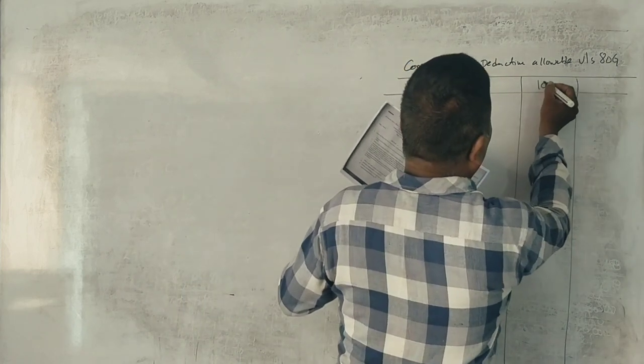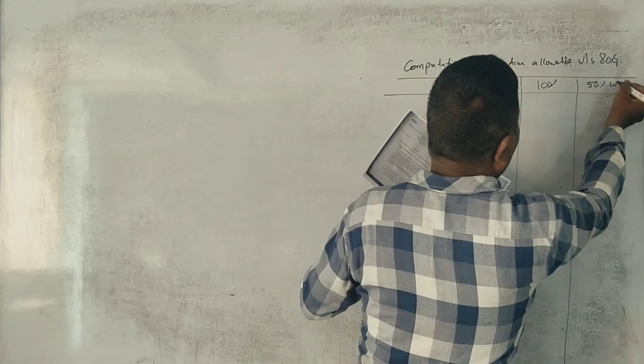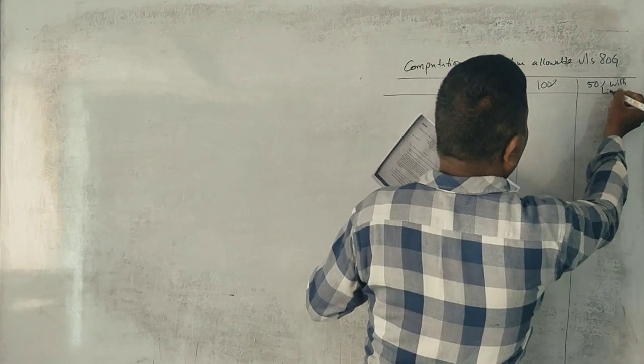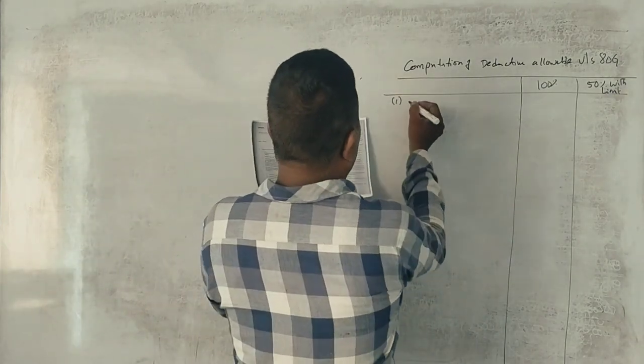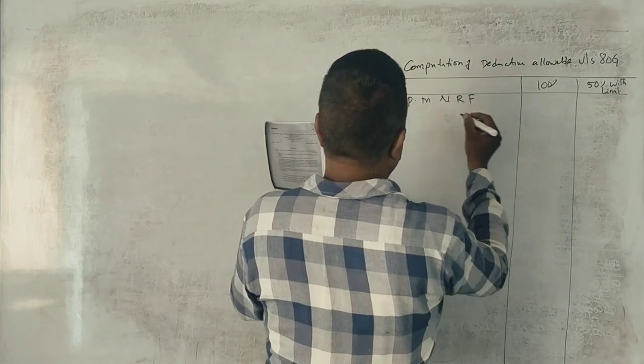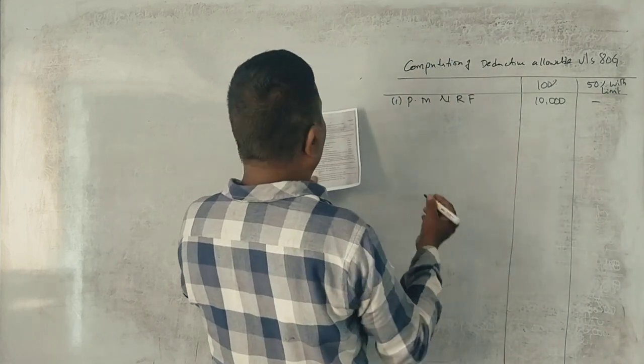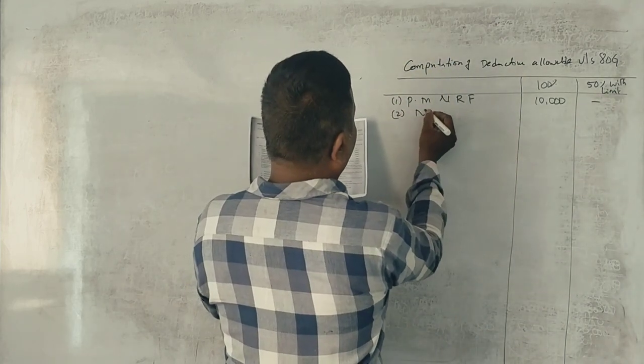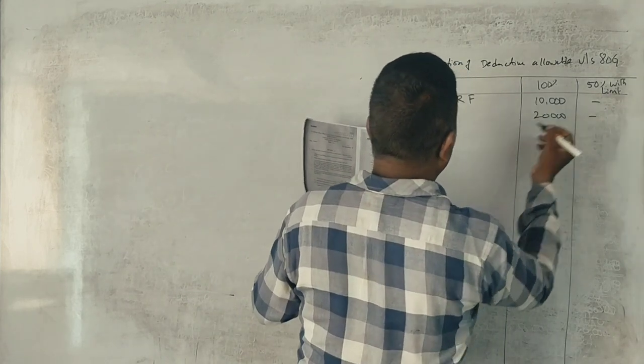100% and 50% with limit. 50% with limit. First two: Prime Minister's National Relief Fund, it is 100%, correct? Next, National Defence Fund, NDF Fund, it is 100%.